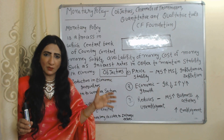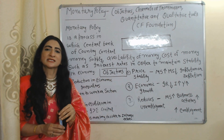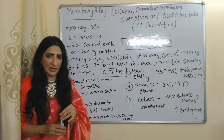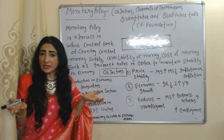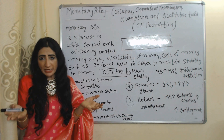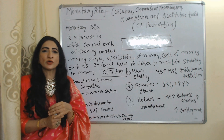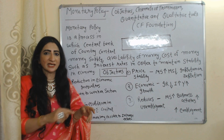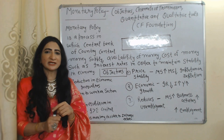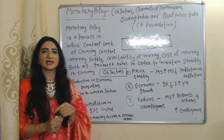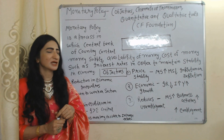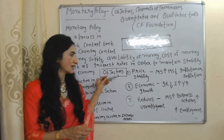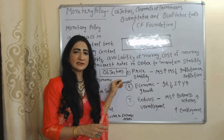Monetary policy is a process in which the central bank of a country controls money supply, availability of money, and cost of money such as interest rate, in order to maintain stability in the economy. Now we will see the objectives of monetary policy — price stability.